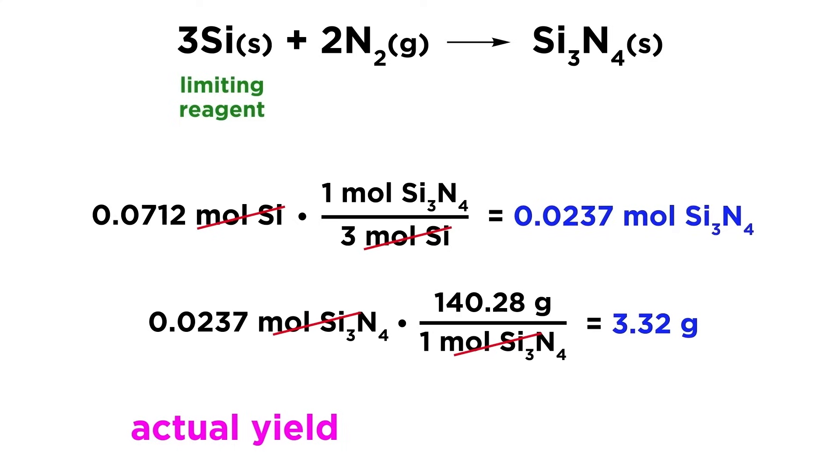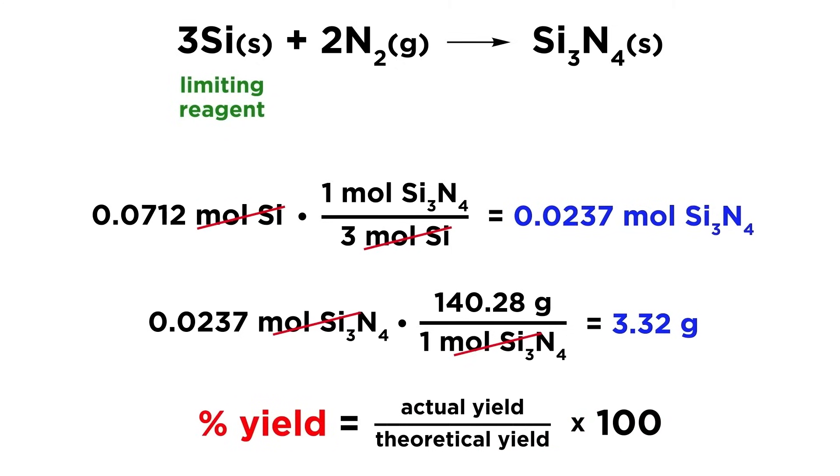What we actually get is called the actual yield, and we can use the actual yield to calculate the percent yield, which is the percentage of the theoretical yield that the actual yield represents. To get this we simply divide the actual yield by the theoretical yield, and multiply by 100.